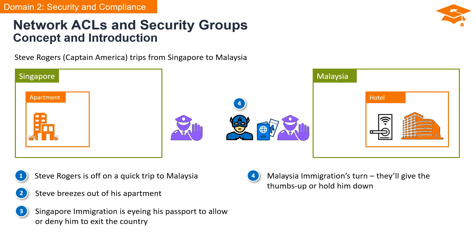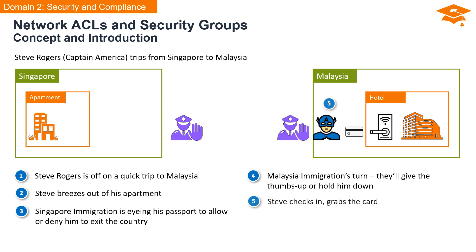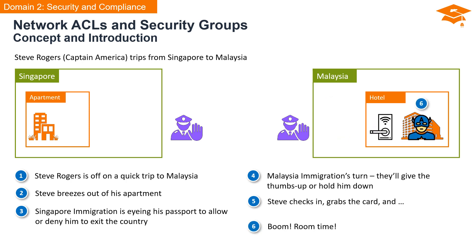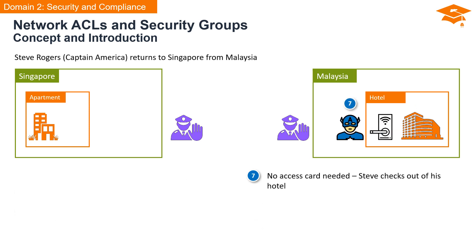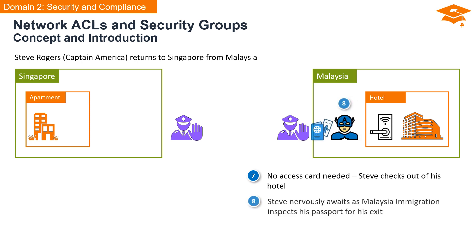Steve is unsure whether he will receive approval or encounter delays at Malaysia Immigration. He finally gets through and proceeds to check in at his hotel, receiving his hotel keycard. Steve enters his hotel room and takes some well-deserved rest. On his return to Singapore, Steve no longer requires the hotel access card to check out. Upon arriving at Malaysia Immigration, Steve anxiously awaits the officer's passport inspection.